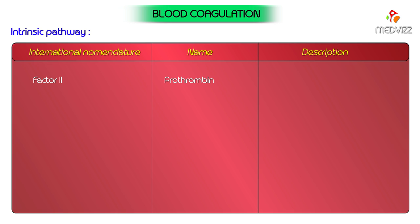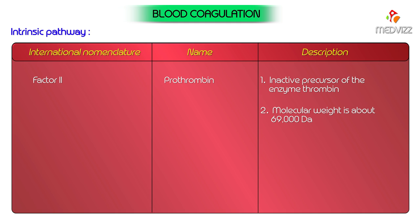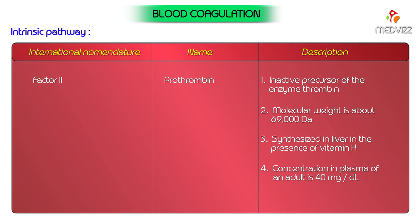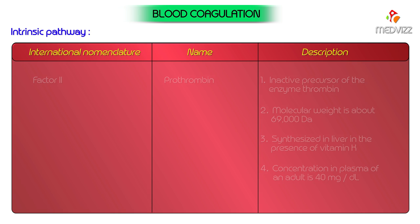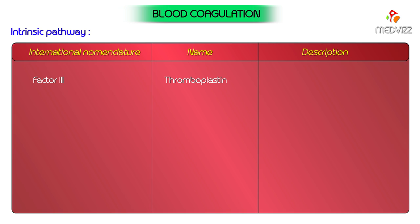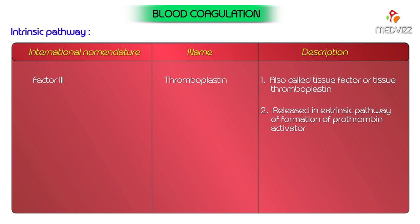Prothrombin is synthesized in the liver in the presence of vitamin K. Its concentration in plasma of an adult is 40 milligrams per deciliter, which falls in liver diseases. In newborn babies, plasma concentration of prothrombin is lower. Factor 3, thromboplastin, is also called tissue factor or tissue thromboplastin; it is released in the extrinsic pathway. Factor 4, calcium: ionic calcium is essential for blood coagulation.